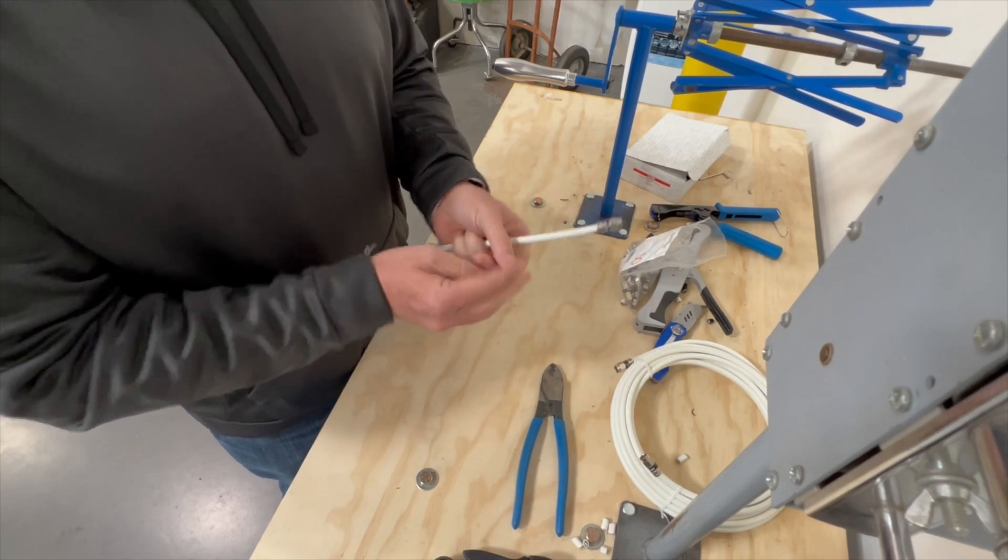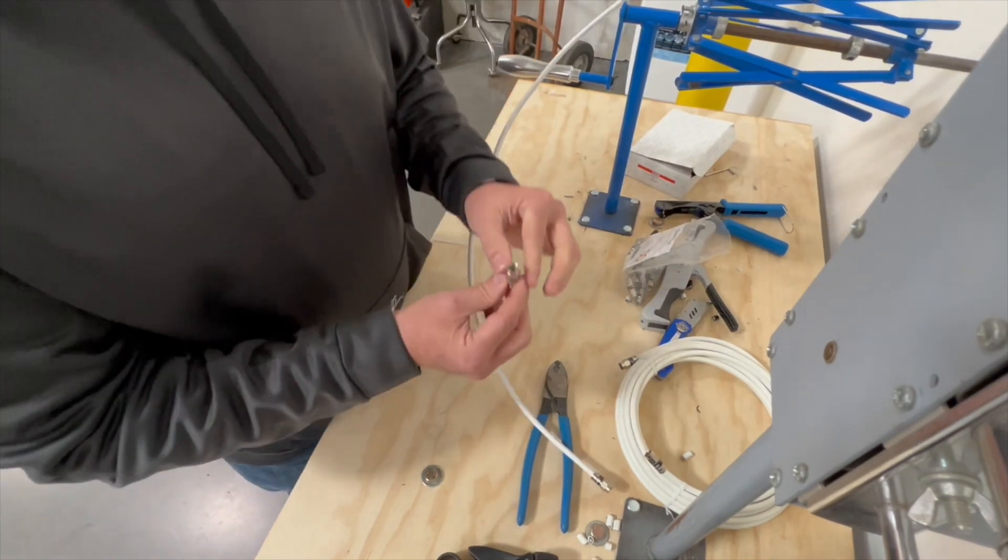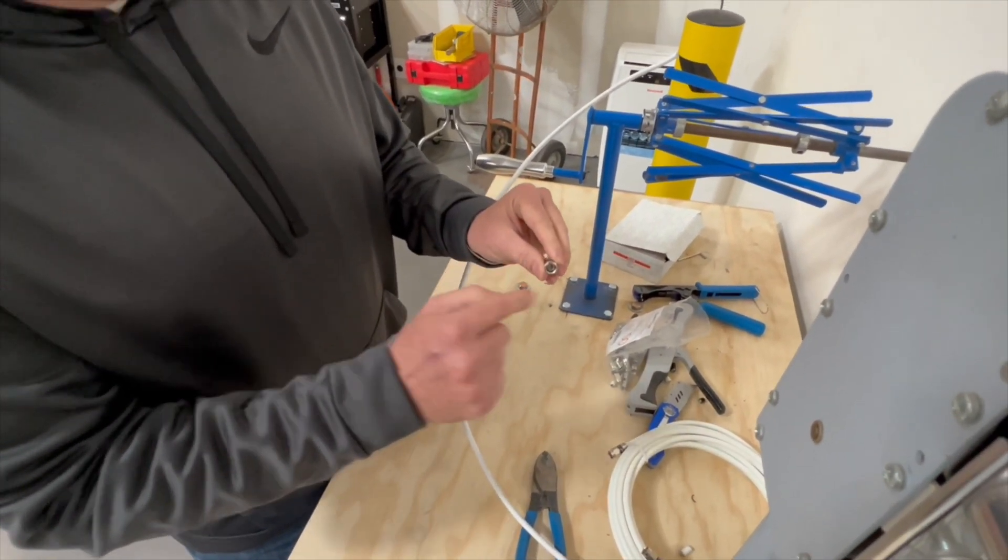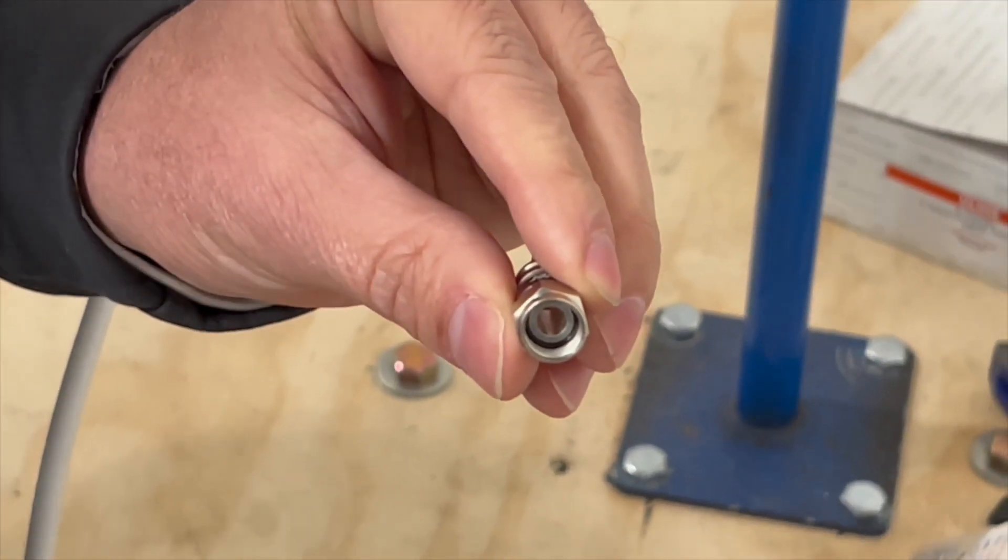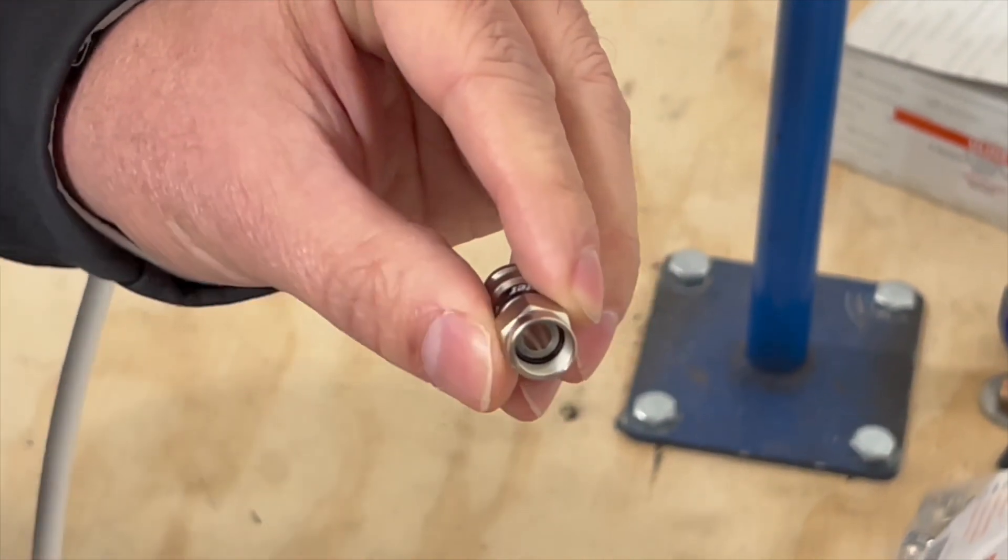This connector actually has dual o-rings. You can see inside the connector there's a black circle - that's an o-ring that prevents moisture migration from getting in the front of the nut into the cable, keeping water from getting back into the cable and corroding it.